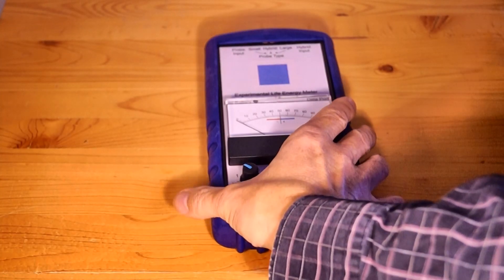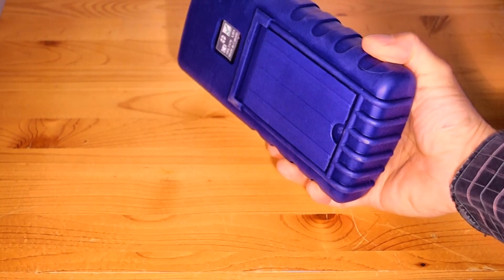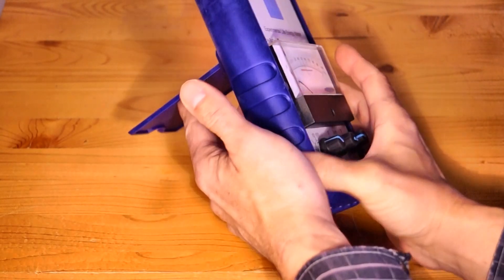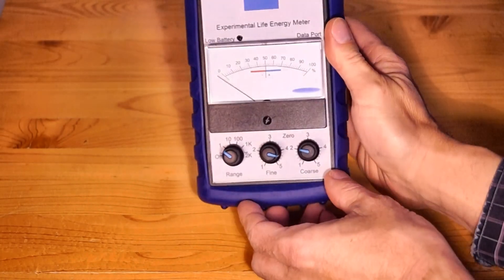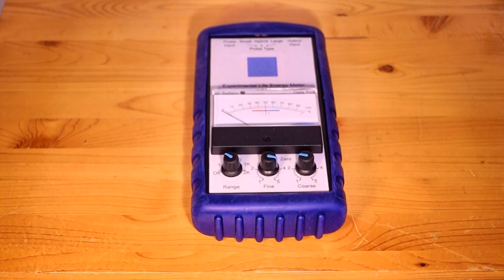The meter has a pop-up stand in the back, which can be easily pulled out. So the meter can be stood up or it can be put back in and used flat on the surface.